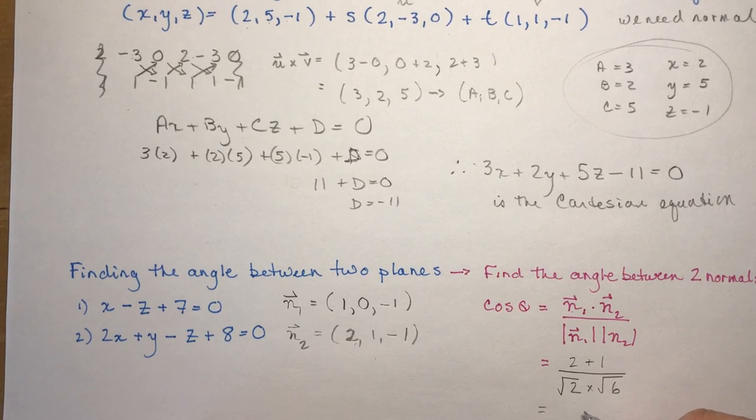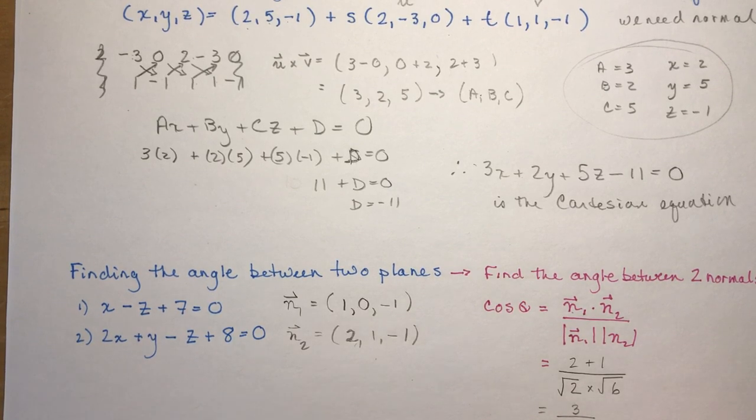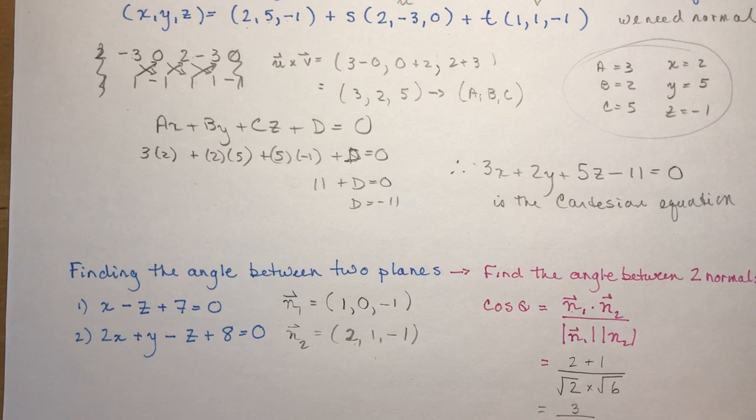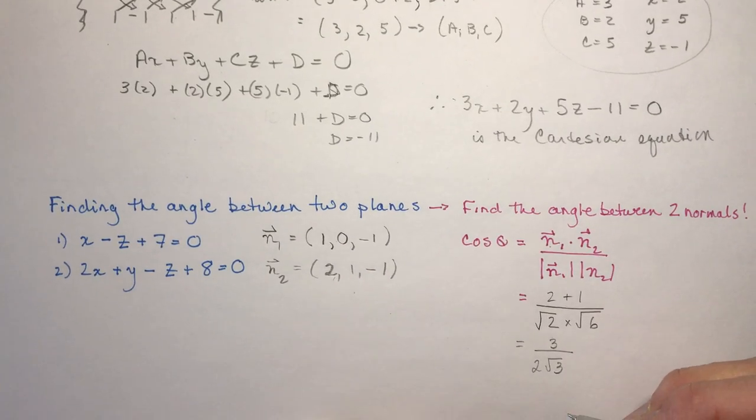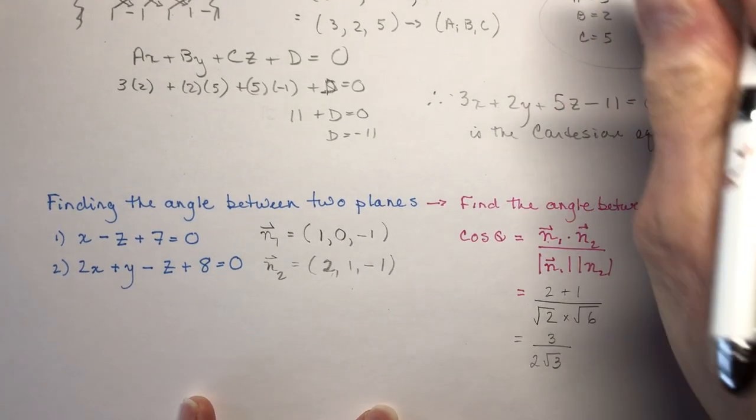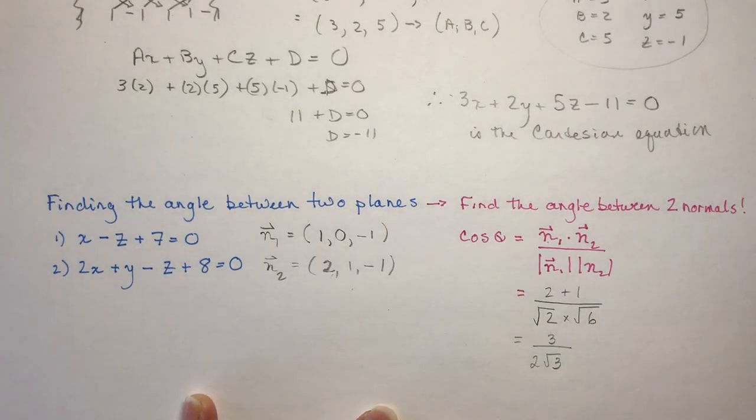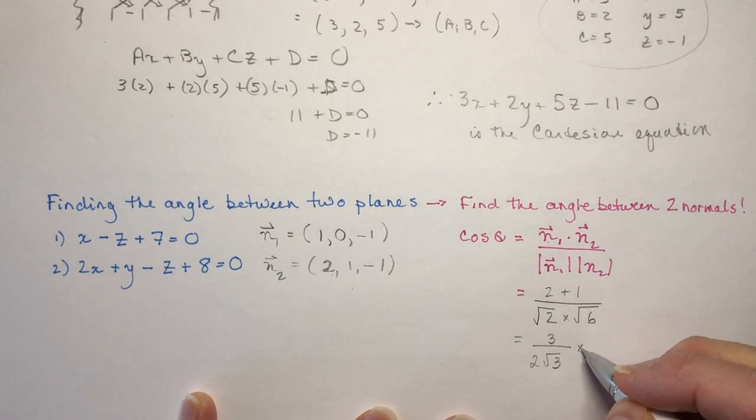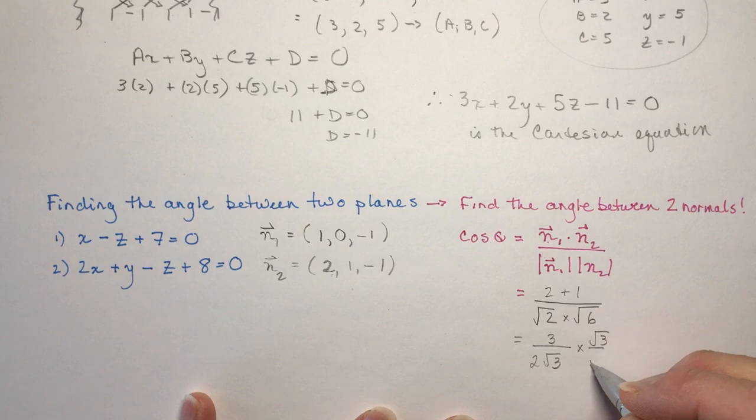And that's going to give me three over the root of 12. Three over square root 12. Square root 12 would be two root three, wouldn't it? And let's say your teacher asked you to do this without using a calculator. Could you finish this work? I bet you could, if you thought about it enough.